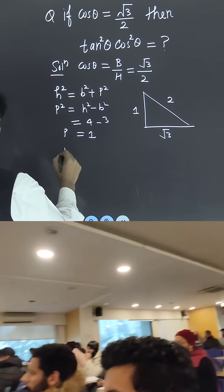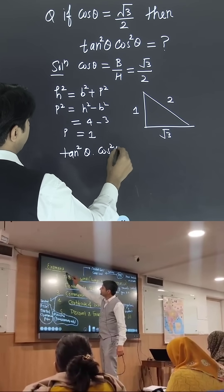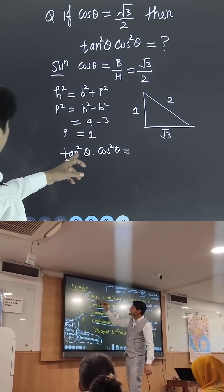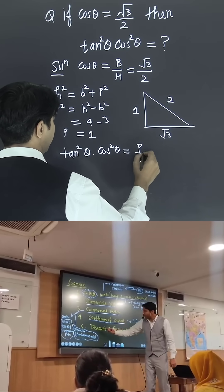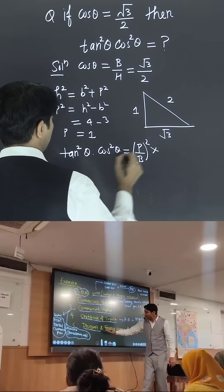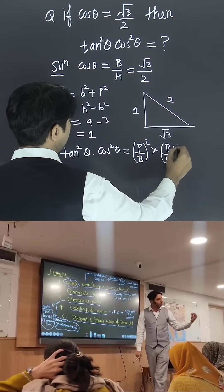Now, we have to find out the value of tan²θ times cos²θ. You know very well, what is the value of tan θ? Perpendicular divided by base. Whole squared.